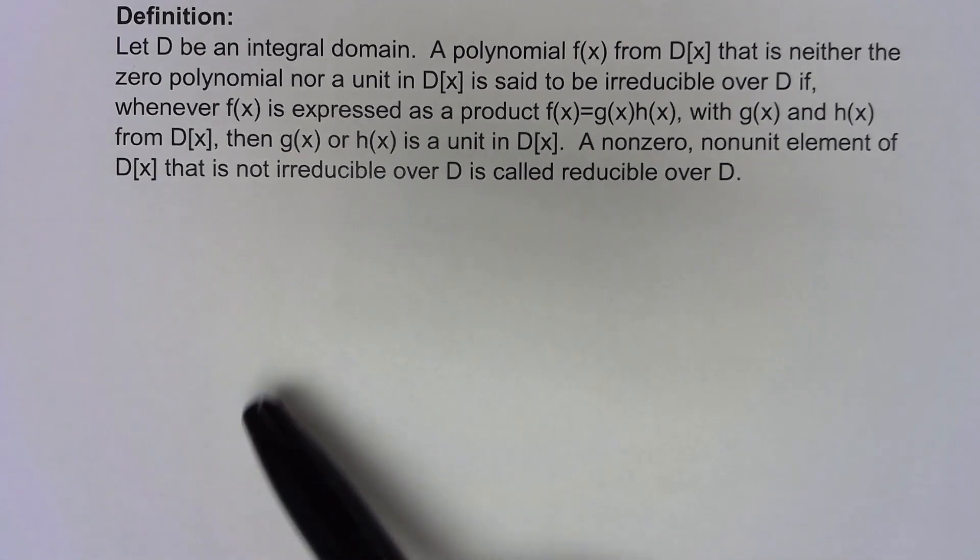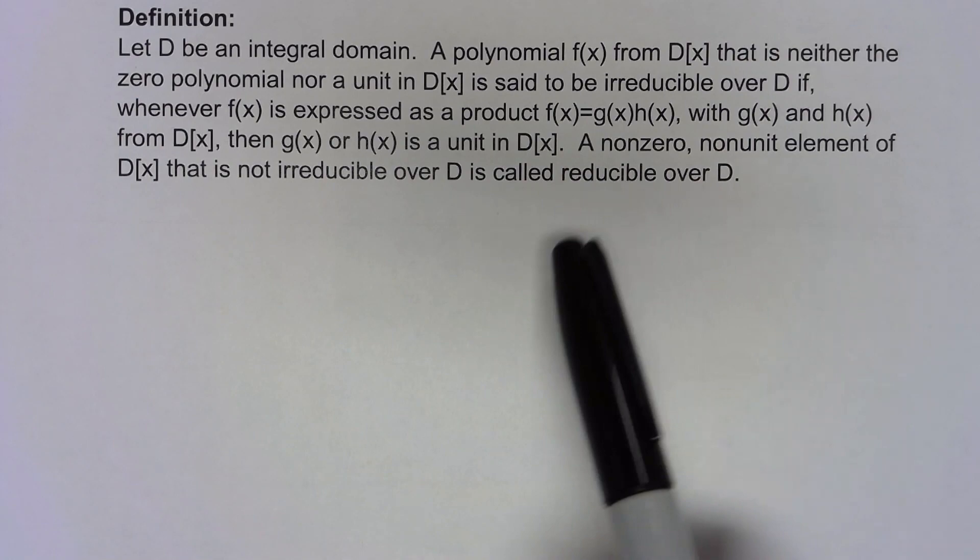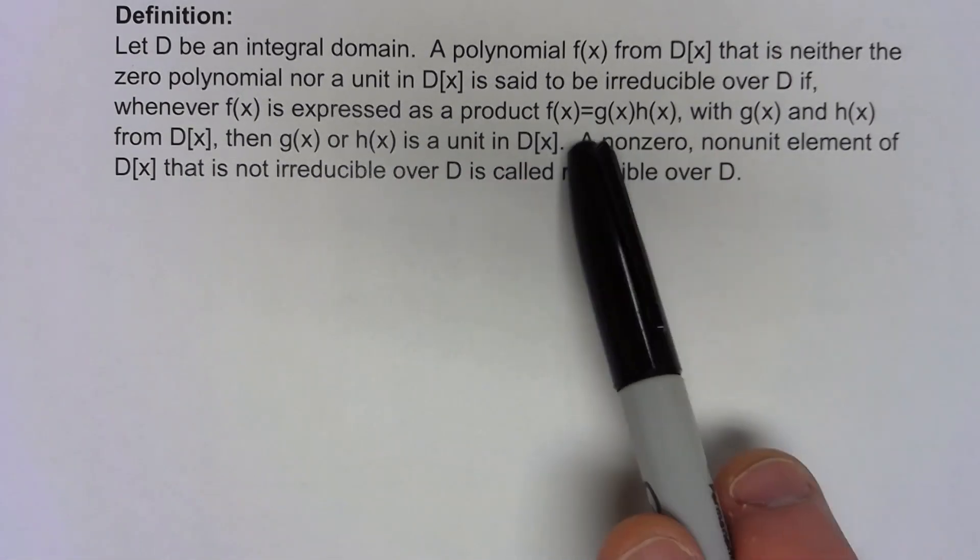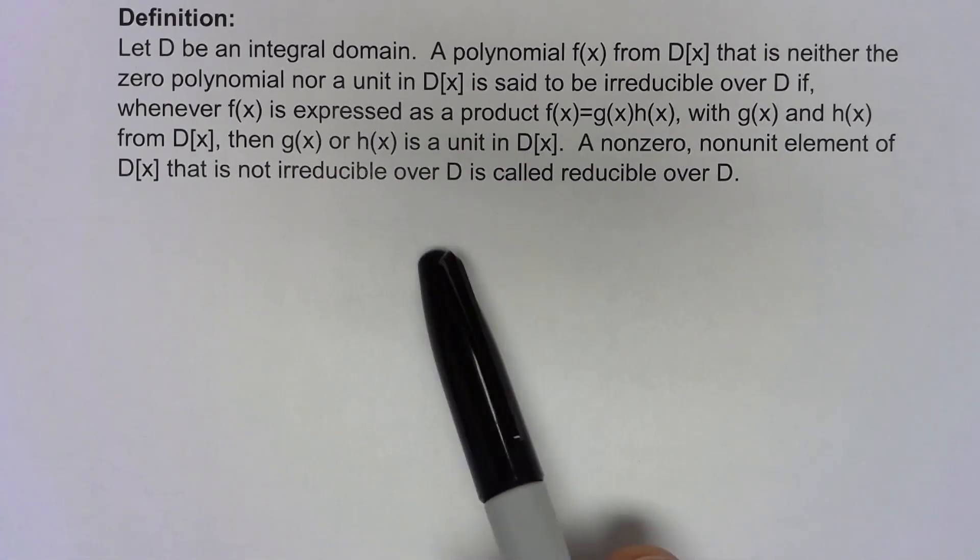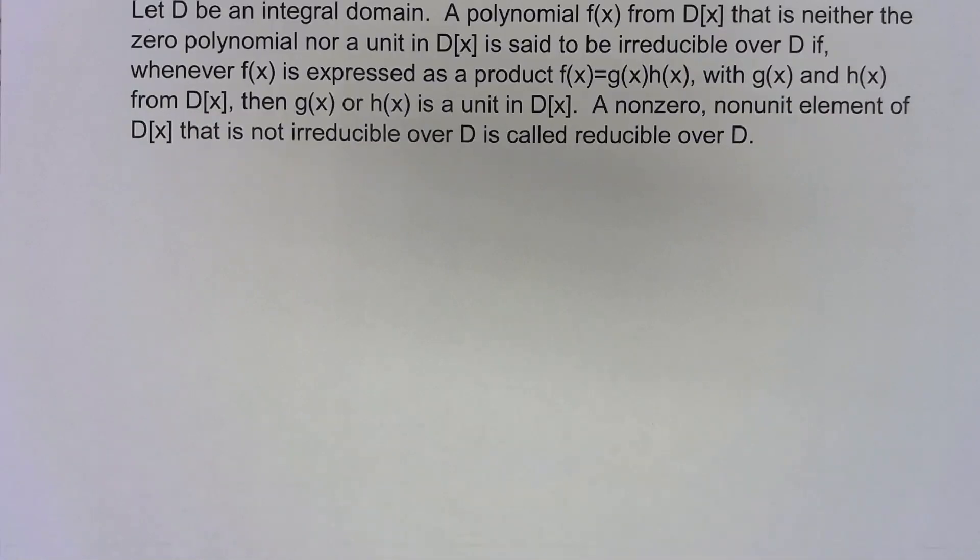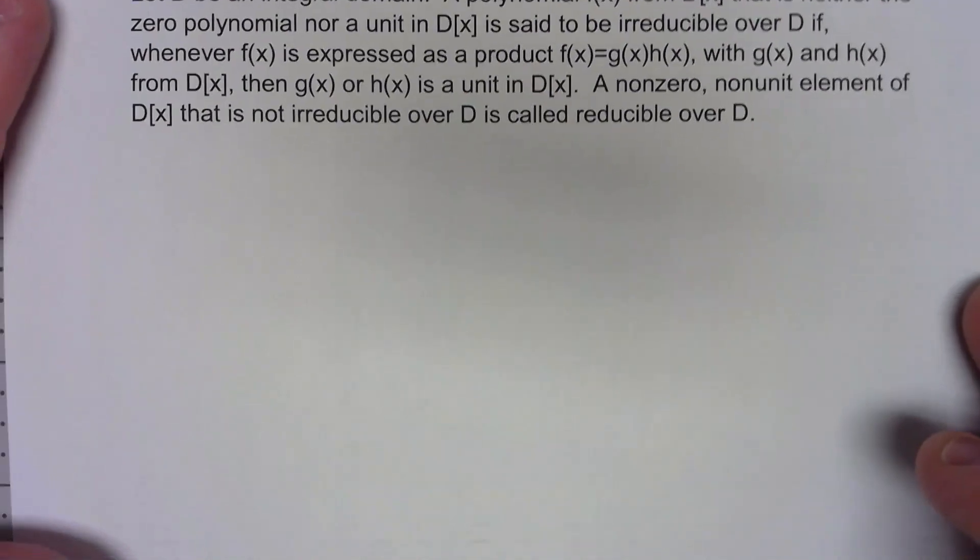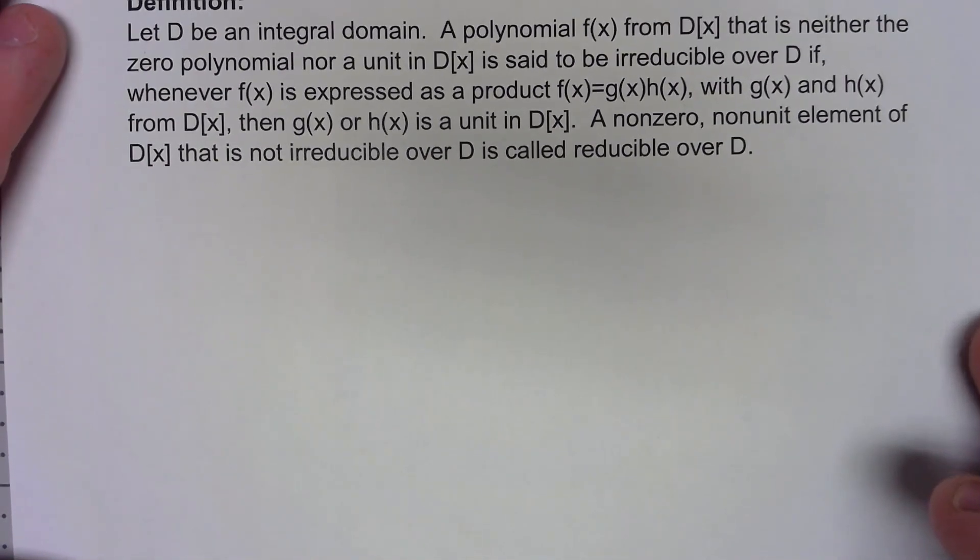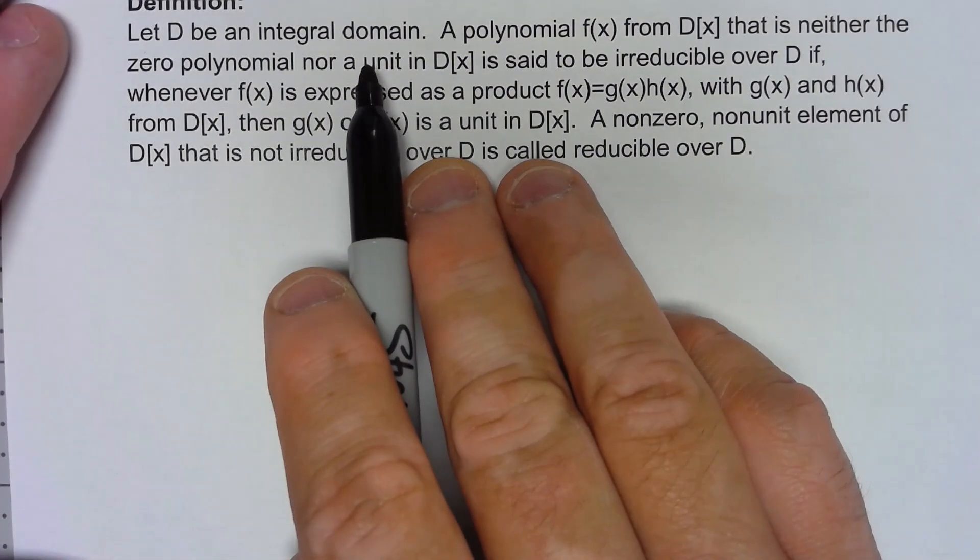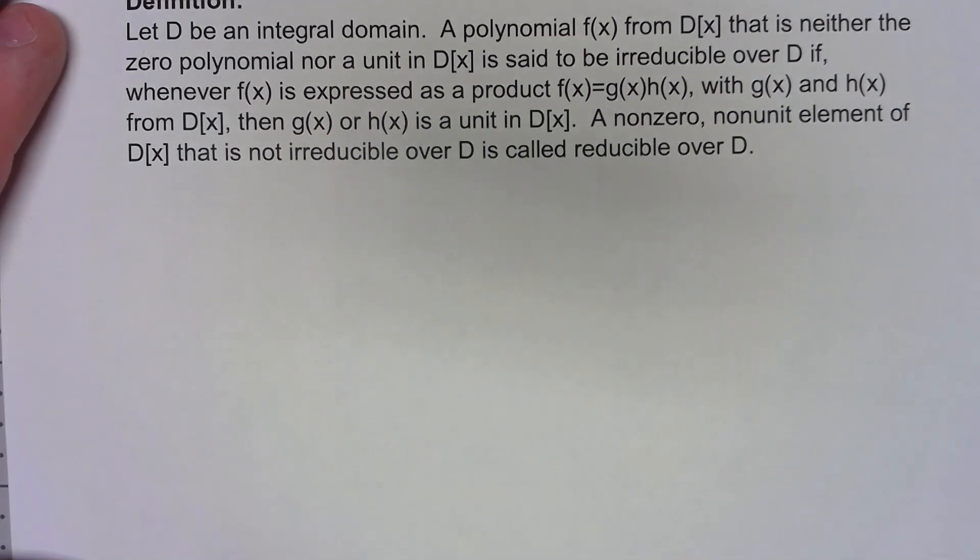If we can't do that or if there is a way to break it down then we'll say it's called reducible. Now one of the things that's not completely intuitive about this is that what the integral domain is makes a huge difference and there's some very unintuitive things that can happen here.